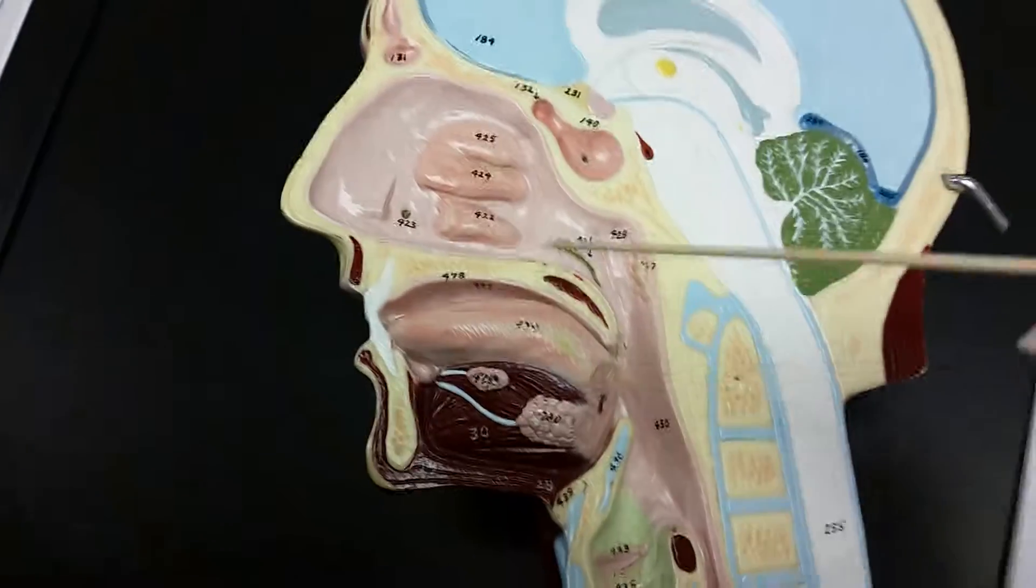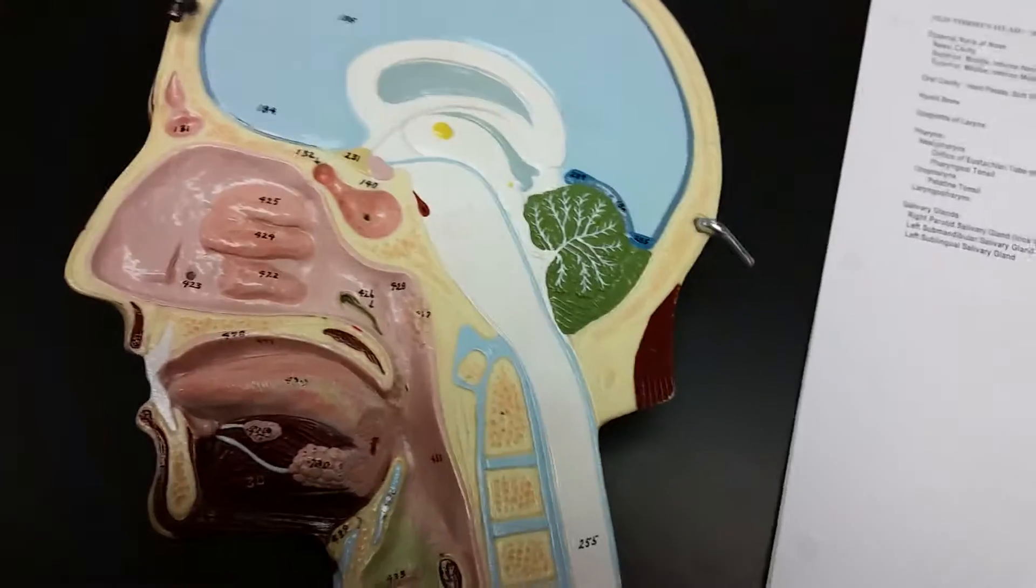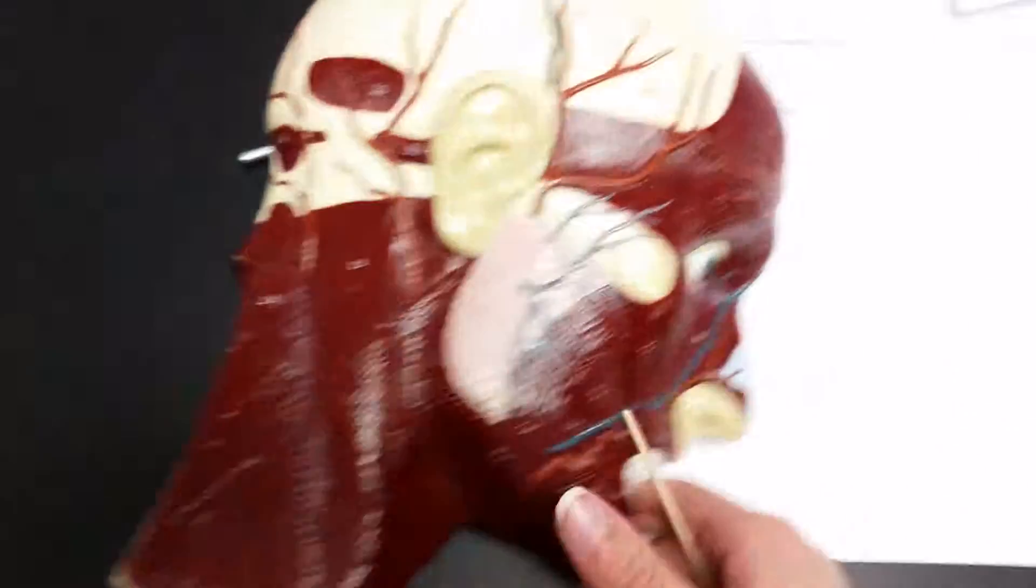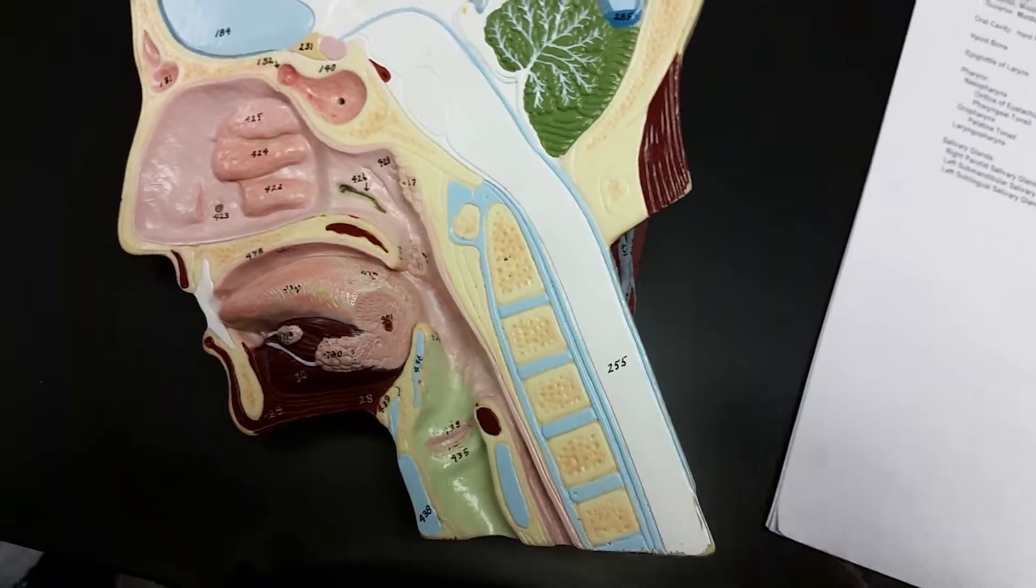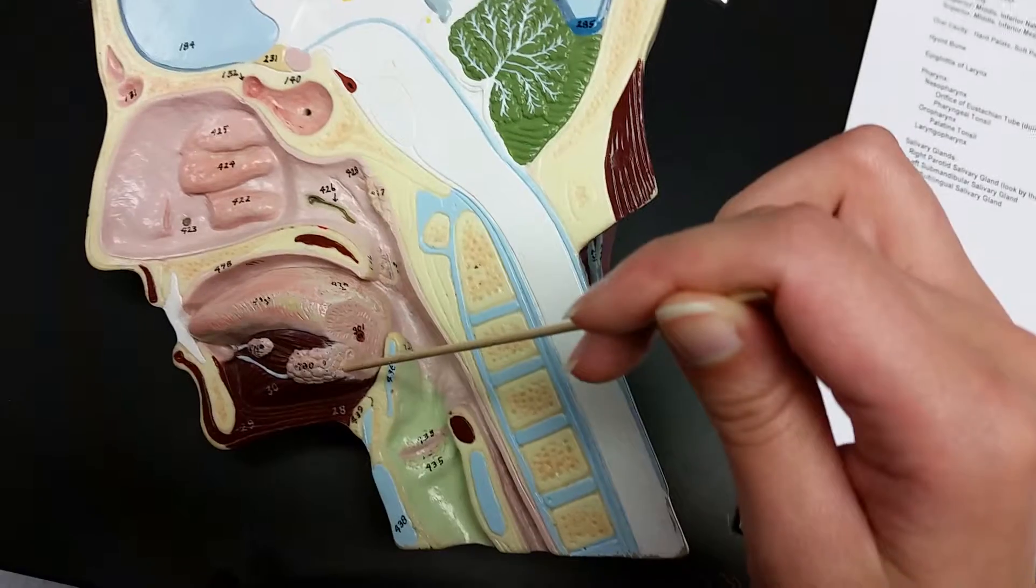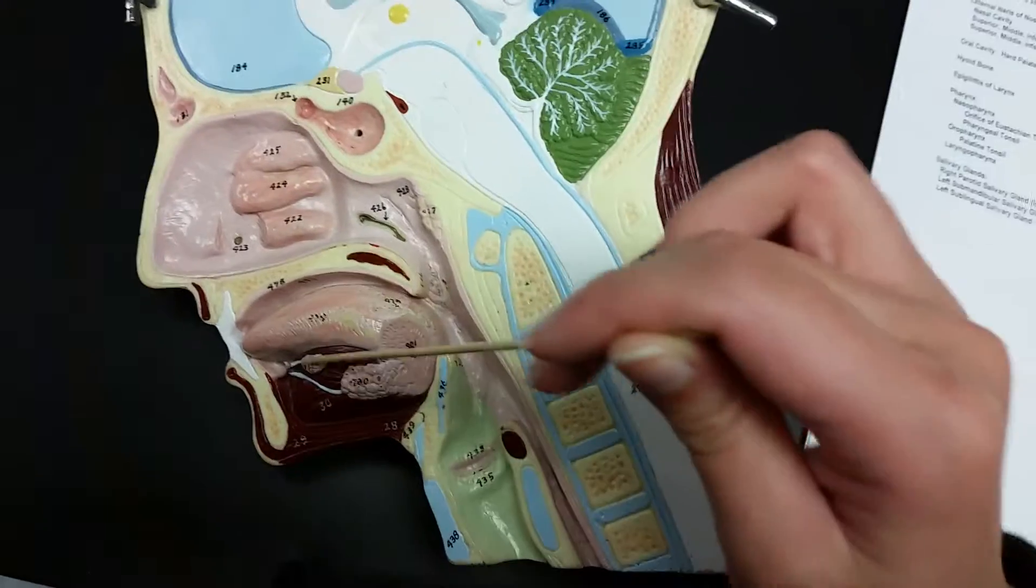The salivary glands would be... The right parotid salivary gland would be back here. The left submandibular salivary gland would be this. The left sublingual salivary gland would be this.